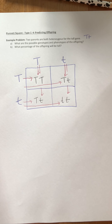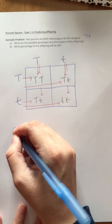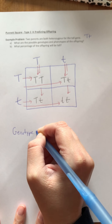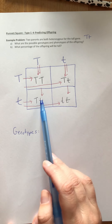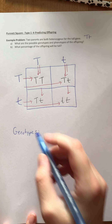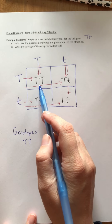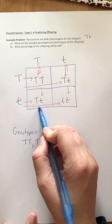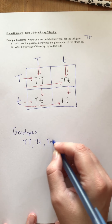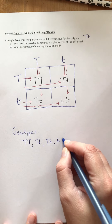Now our square is complete — all four boxes are filled in. Our next step is to write out the genotypes and phenotypes of the offspring in the four boxes. The genotypes are the alleles present for each offspring. So looking at each of the four boxes: capital T capital T in our first box, capital T lowercase t in the second, capital T lowercase t in the third, and lowercase t lowercase t in the last.